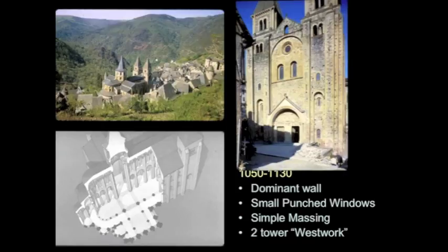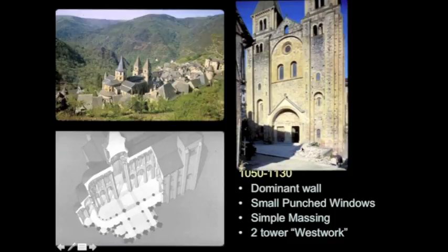It's got a Westwork — this big, inflated-in-scale, billboard-like facade on the church, flanked by two towers, which is typical of the Romanesque. We have small punched windows. We also have a rose window, which is a feature initiated during the Romanesque period and becomes very popular throughout.